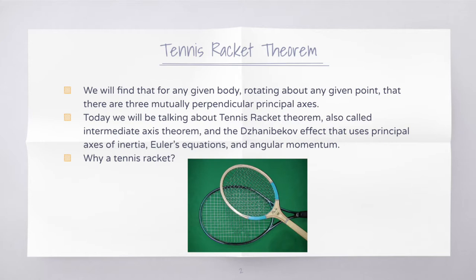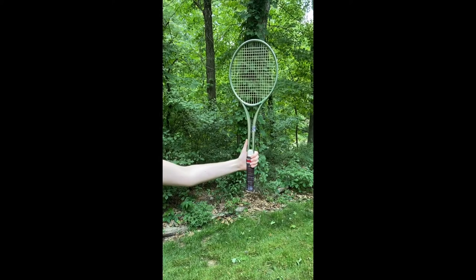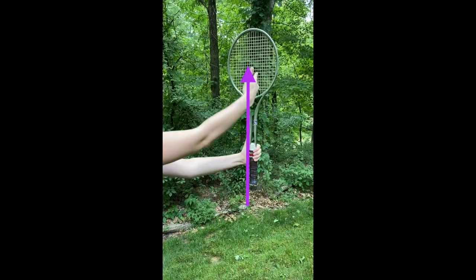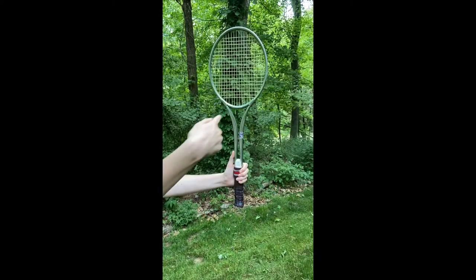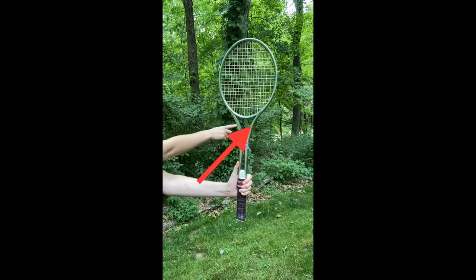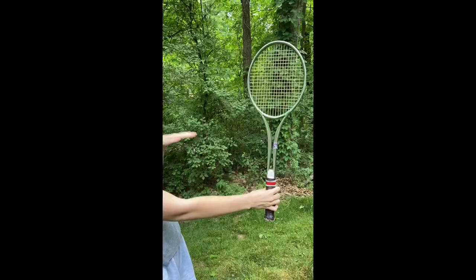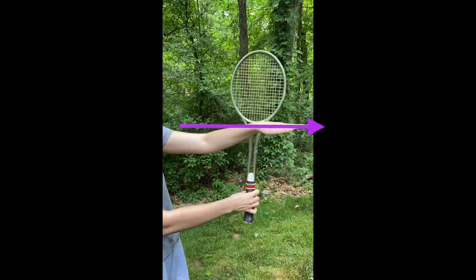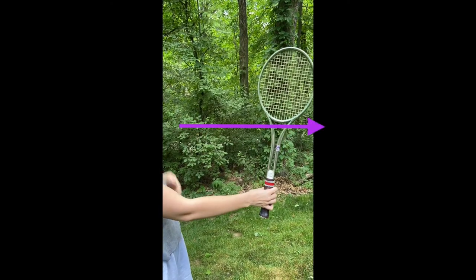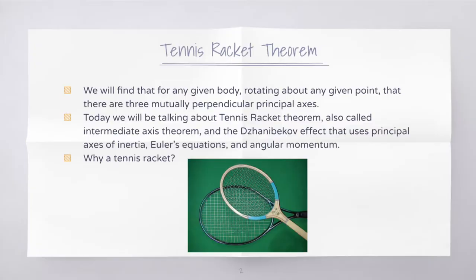To demonstrate this theory effectively, we can use any object that has three different moments of inertia for each principal axis, and a tennis racket is the perfect example. There is one axis along the long side, one axis going through the tennis racket itself, and one axis going through the side of the racket. Each of these axes of rotation have different moments of inertia, which changes proportional to the mass and size of the object's radius.